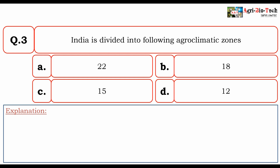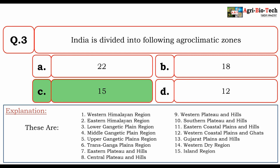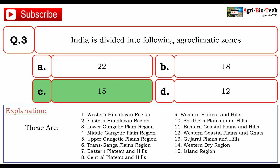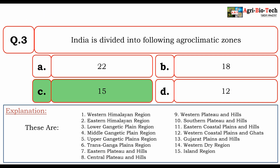The correct option is C. 15. India is divided into 15 agro-climatic zones: Western Himalayan region, Eastern Himalayan region, Lower Gangetic Plain region, Middle Gangetic Plain region, Upper Gangetic Plain region, Trans Ganga Plain region, Eastern Plateau and Hills, Central Plateau and Hills, Western Plateau and Hills, Southern Plateau and Hills, Eastern Coastal Plains and Hills, Western Coastal Plains and Ghats, Gujarat Plains and Hills, Western Dry region, and Island region. So the correct answer is C. 15.